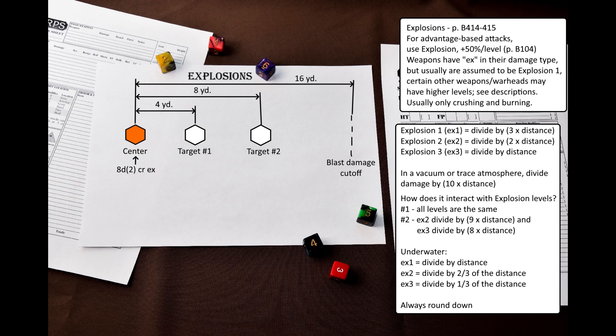The basic set says that thinner or thicker atmospheres reduce or enhance the blast, but does not provide any rules. However, it says that in a vacuum or trace atmosphere, you divide damage by 10 times distance in yards. No rules are given for higher levels of explosion. Underwater divide collateral damage by distance in yards. Pyramid 3.26 expanded these rules for the higher levels of explosions. 2nd level explosions divide their damage by 2 thirds of the distance, and 3rd level explosions divide their damage by 1 third of the distance.